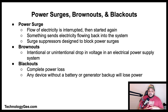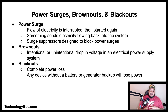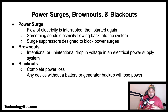A brownout is an intentional or unintentional drop in voltage in an electrical power supply system. A blackout is complete power loss, and when a blackout occurs the home, office, or school has absolutely no power, which causes any powered device without a battery or generator backup to stop working.